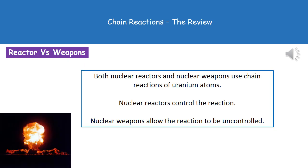We've heard about nuclear reactors and nuclear weapons, and the key thing to remember is that they both use chain reactions of uranium atoms. There is one key difference between them: in nuclear reactors, we control the reaction, while in nuclear weapons, it's uncontrolled. So the key difference is that nuclear reactors are controlled chain reactions, and nuclear weapons are uncontrolled chain reactions.